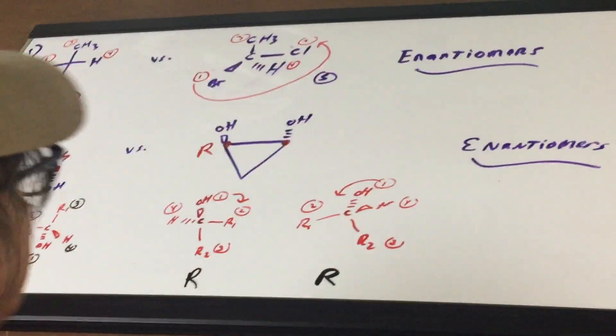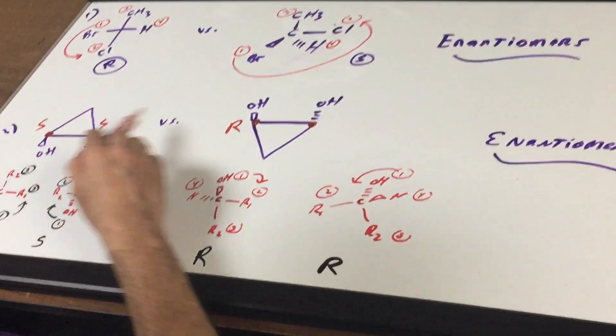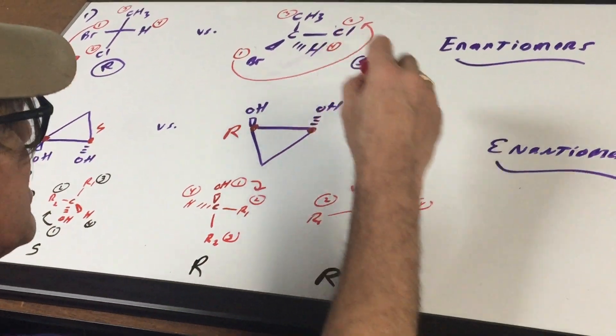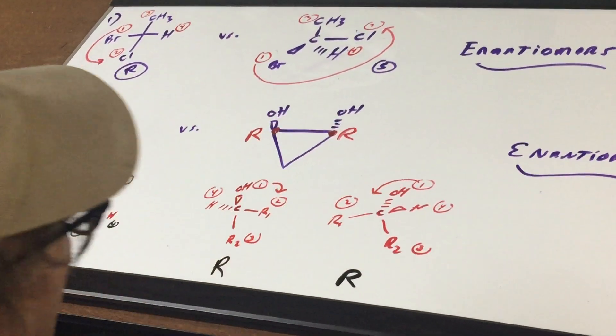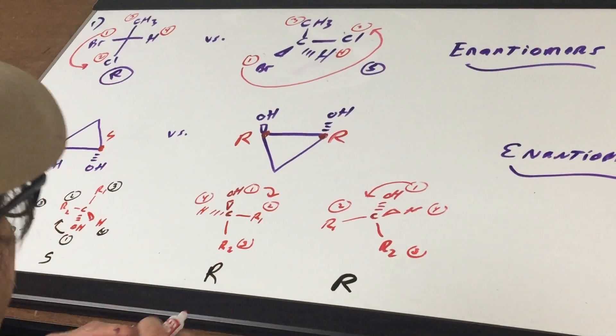which makes these enantiomers. If this was an SS and this was an RS, then it would have been diastereomers. But SS and RR represent enantiomers.